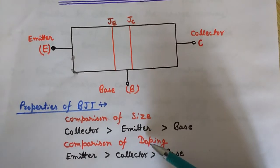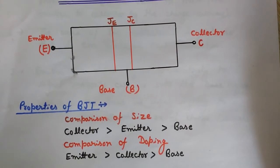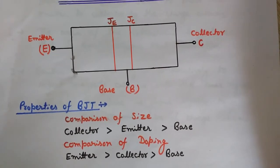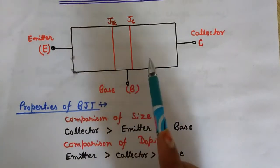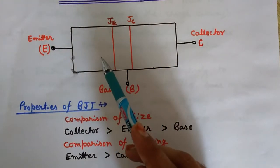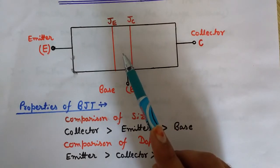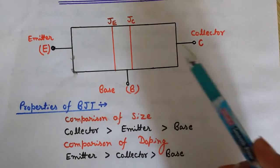Doping means deliberately or intentionally adding impurities to a semiconductor. The pure form of a semiconductor is known as intrinsic semiconductor, but its conductivity is so low it is not used for practical applications. So we deliberately add impurities externally, making it an extrinsic semiconductor. This process is known as doping. Doping is done in all three regions but in different amounts: emitter is highly doped, base is lightly doped, and collector is moderately doped.